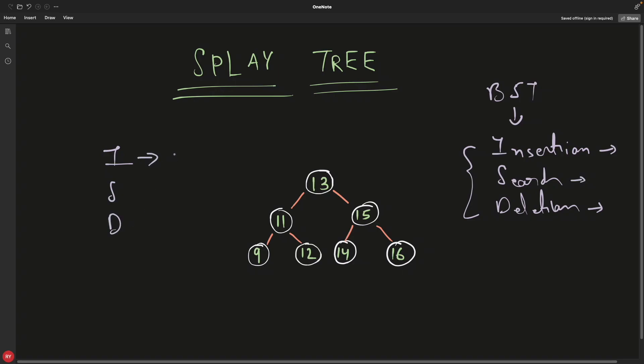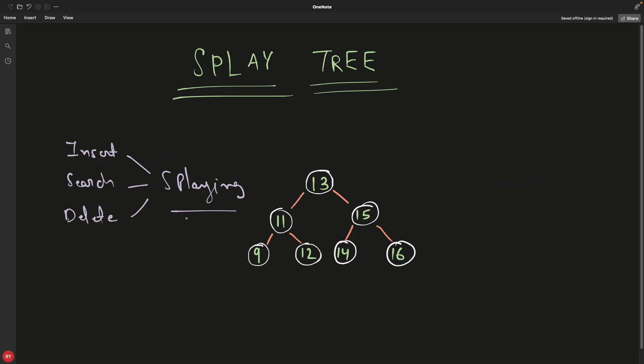Now let's talk about what is splaying. Splaying is an operation to bring all the most frequently used elements closer to the root. I'll repeat this again: splaying is a process to bring the mostly used nodes closer to the root.